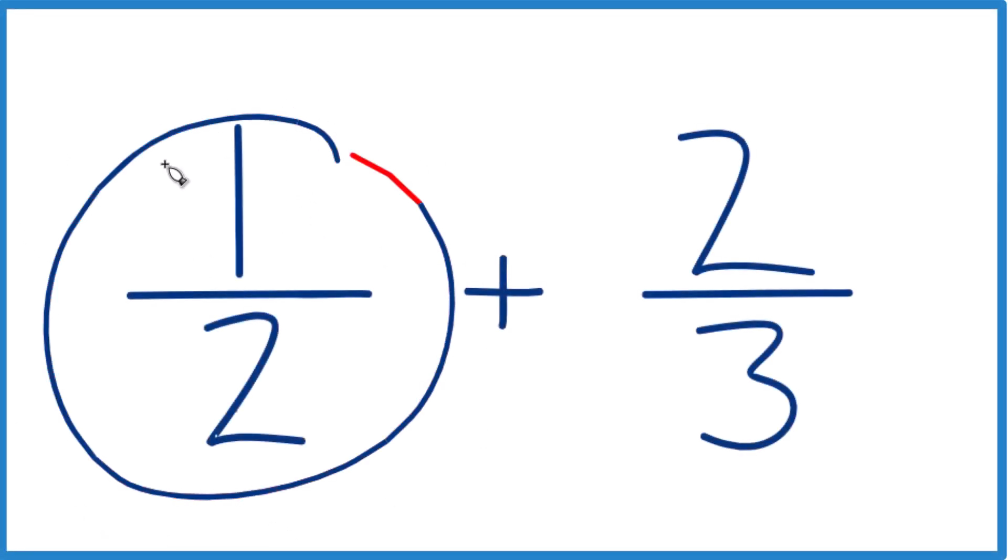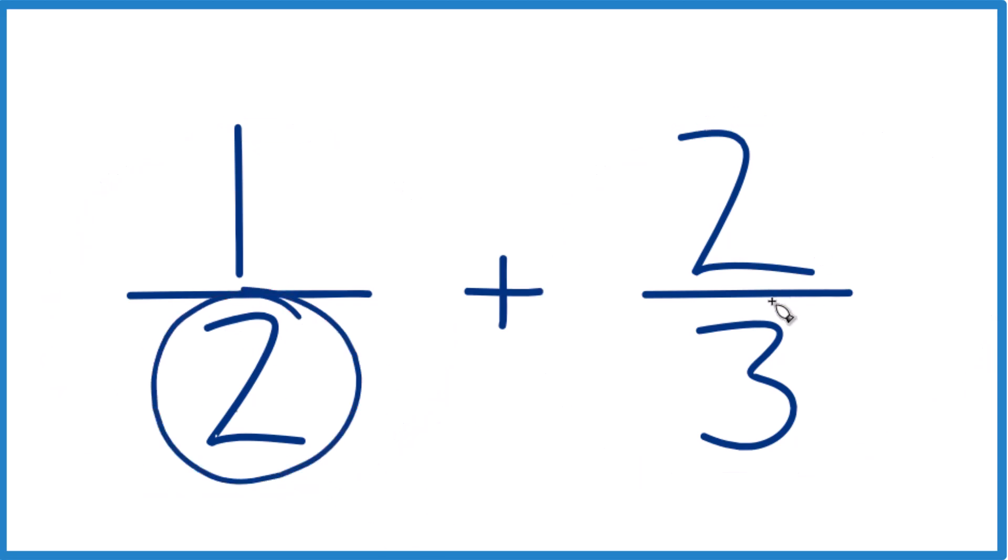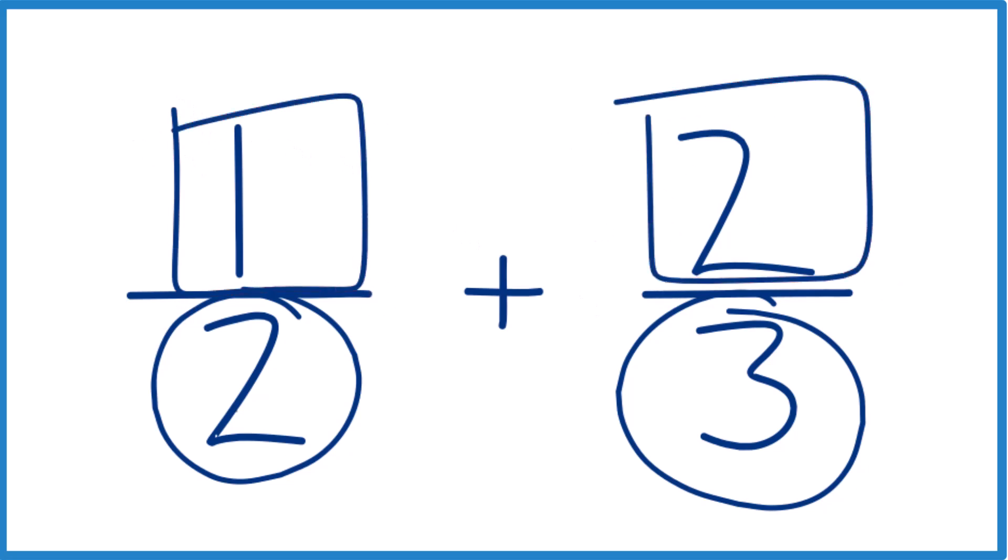Let's add the fractions one-half plus two-thirds. Here's how you do it. What we need is to get the denominators to be the same, because then we can just add the numerators, and then we'll be done.